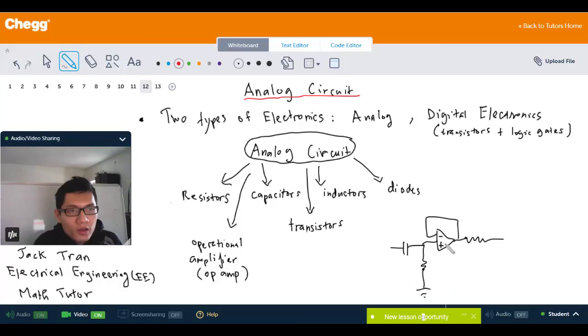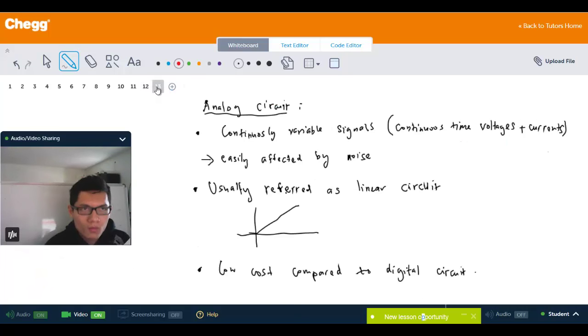circuit is what we call the analog circuit. Compared to the digital circuit, which only takes transistors and logic gates, the analog circuit takes all kinds of signals—all continuously variable signals, which means